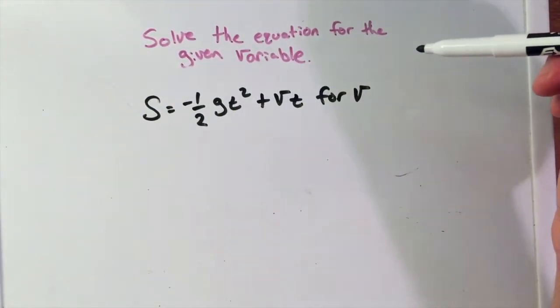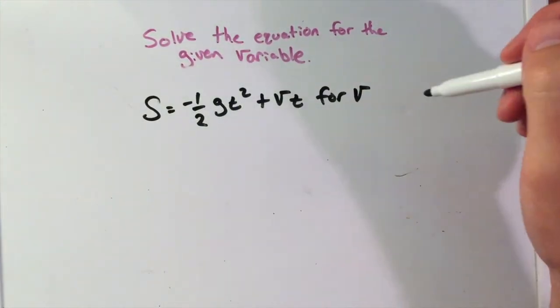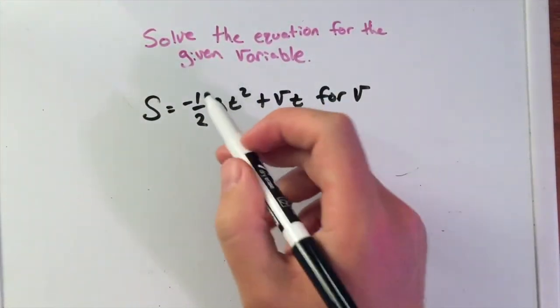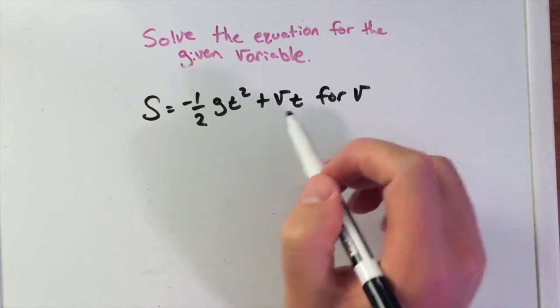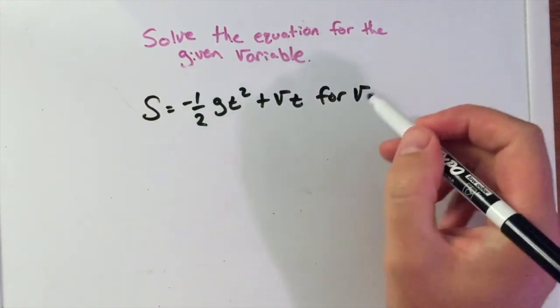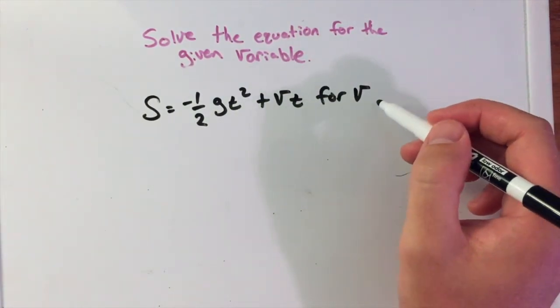Solve the equation for the given variable. This is a little more difficult. We have s equals negative one-half g times t squared plus v times t, and we want to solve for the variable v.